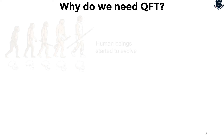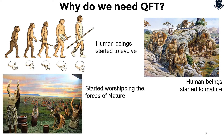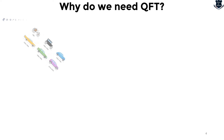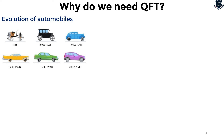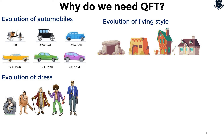As we see with human evolution, human beings started to evolve, mature, and worship the forces of nature. Along with that, we started developing hunting instruments — taming the forces of nature — which actually marked our path to civilization. The evolution of automobiles from 1886 to 1980, 2010, and 2020 shows how things evolved, as did living style from the caveman to the Paleolithic, then to the Neolithic age.